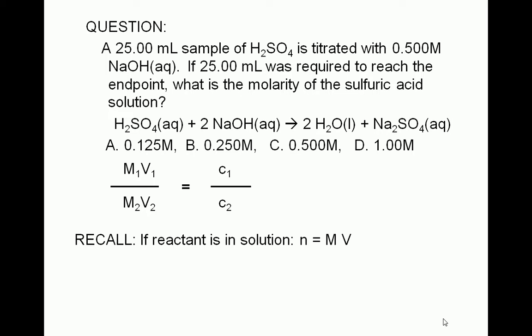If sulfuric acid is reactant 1, the molarity and volume of sulfuric acid are M1 and V1. The volume of sulfuric acid is given in the problem as 25.00 milliliters. The molarity of sulfuric acid is what we're being asked for. The coefficient of sulfuric acid, C1, is implied in the balanced equation to be equal to 1.